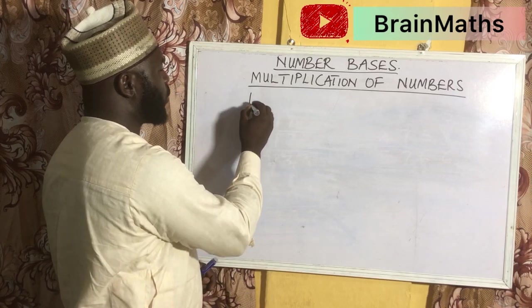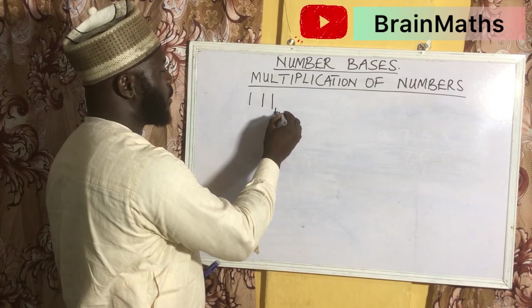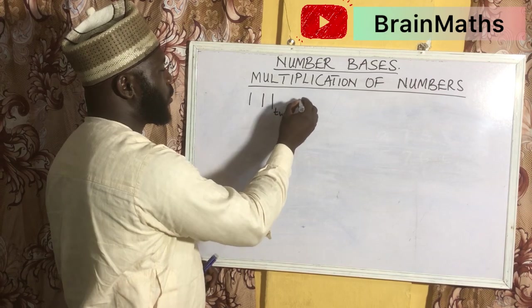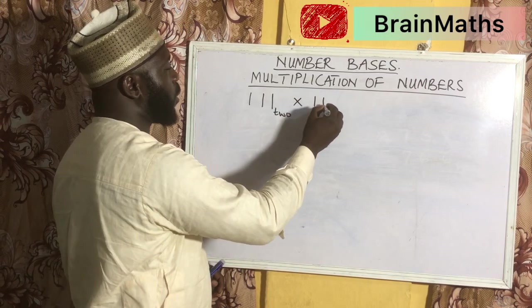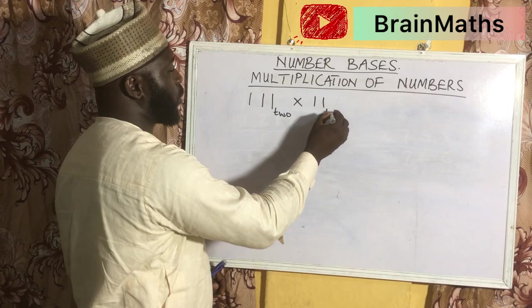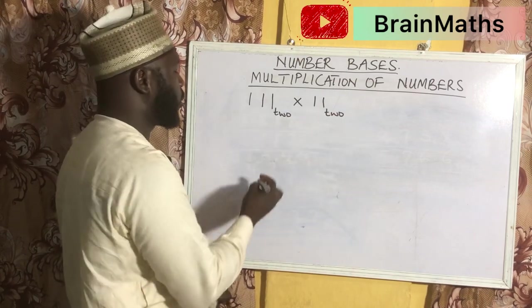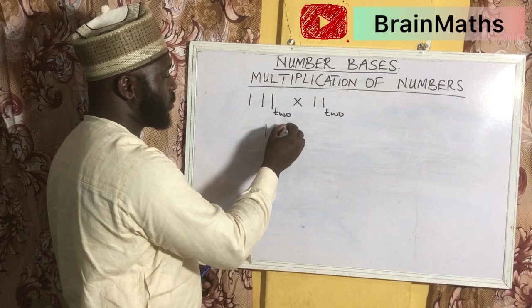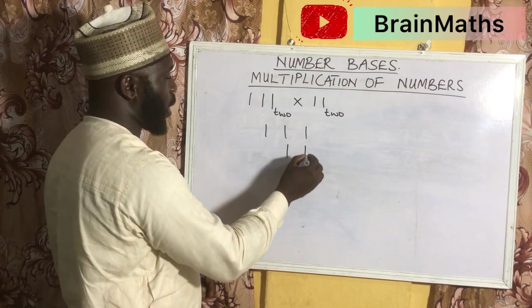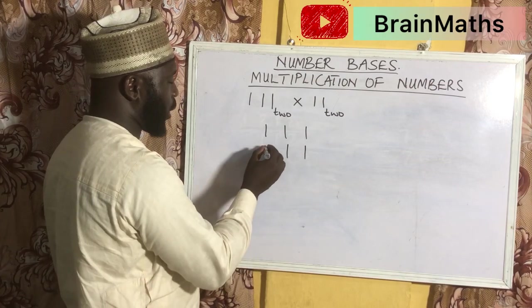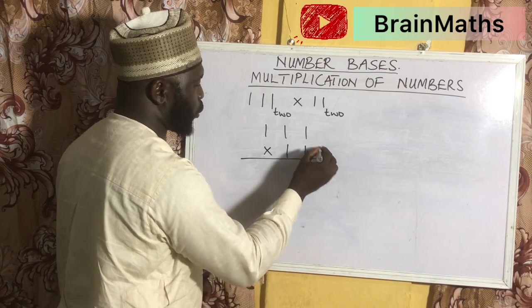If we are given 111 in base 2 to be multiplied by 11 also in base 2, the multiplication will give us 101101 as usual in base 2.